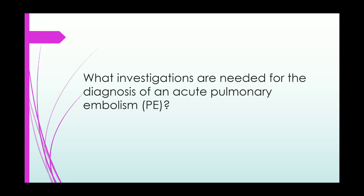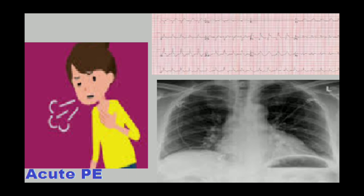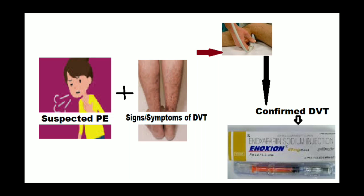For diagnosis of acute pulmonary embolism, women presenting with signs and symptoms should have an ECG and chest X-ray performed. In women with suspected PE who also have DVT symptoms, compression duplex ultrasound should be performed. If it confirms DVT, no further investigations are necessary and treatment should begin straight away.